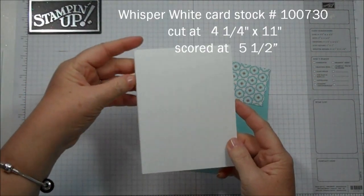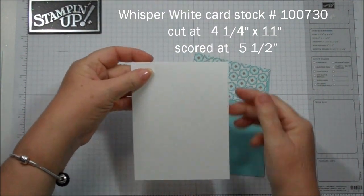Okay, so here are the pieces. We're using the Whisper White, and this is cut at 4 1/4 by 11, scored at 5 1/2.